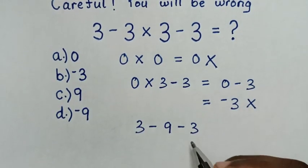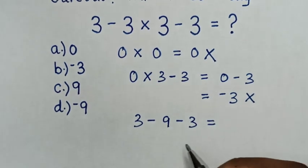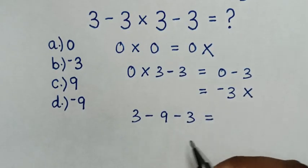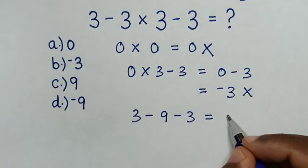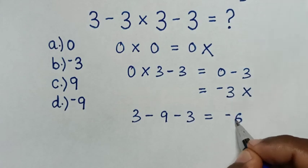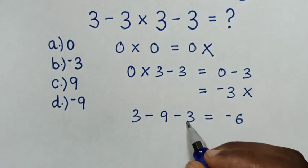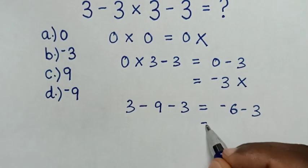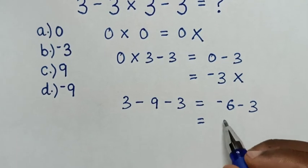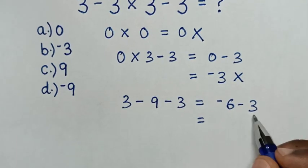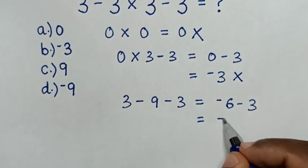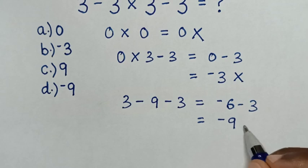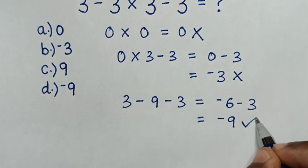Then it will be equal to 3 minus 9 is negative 6, then minus 3. So it will be equal to negative 6 minus 3 is negative 9. So this is correct.